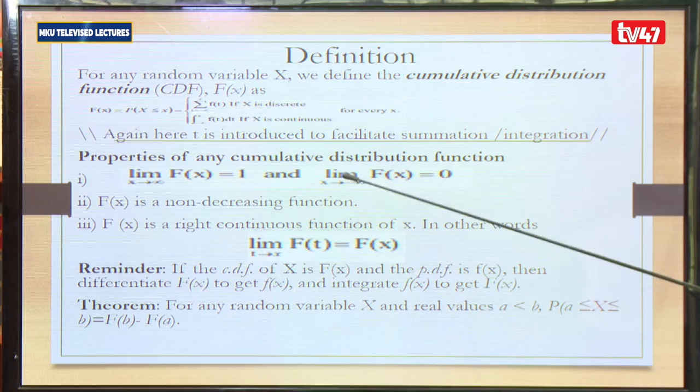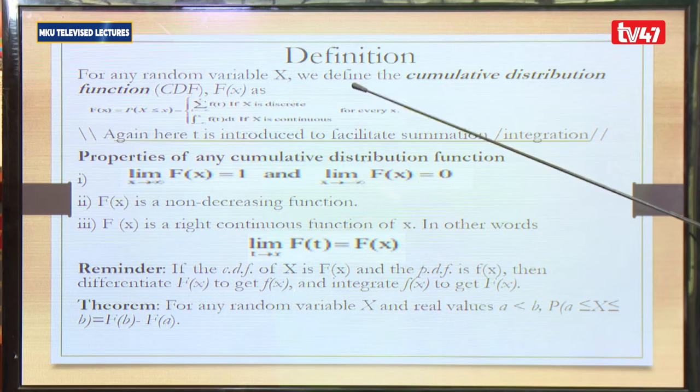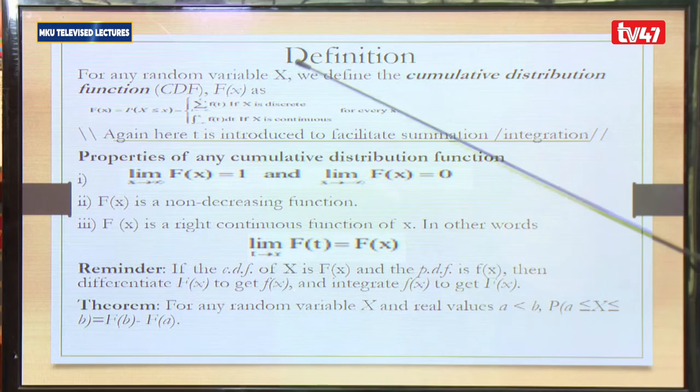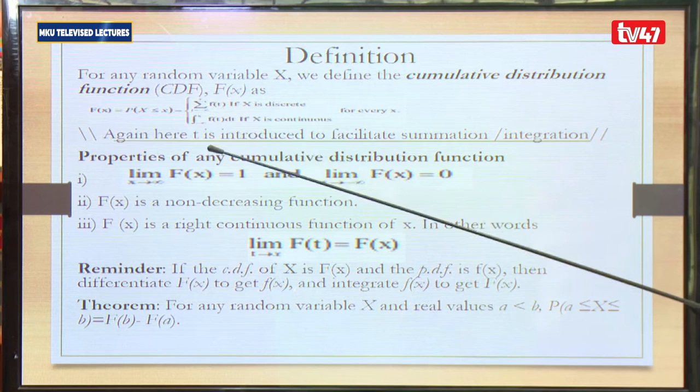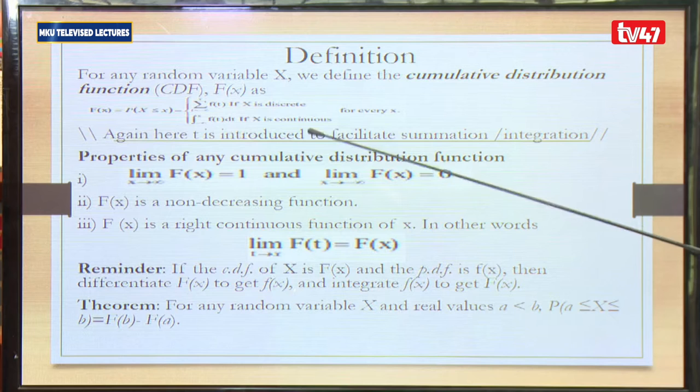For any random variable X, we define a CDF — a cumulative distribution function — with a capital F. In most cases, small f will be used for PDF (probability distribution function) and capital F for the cumulative distribution function. We can define this for both discrete and continuous cases. If you have the PDF, you can transform it into a CDF by summing over all values of X of the PMF for the discrete case, or by integrating the PDF for the continuous case.